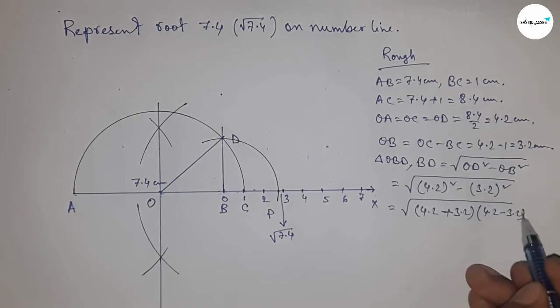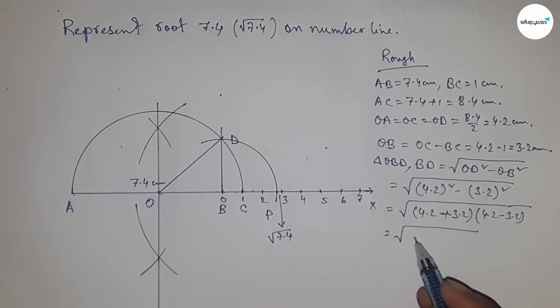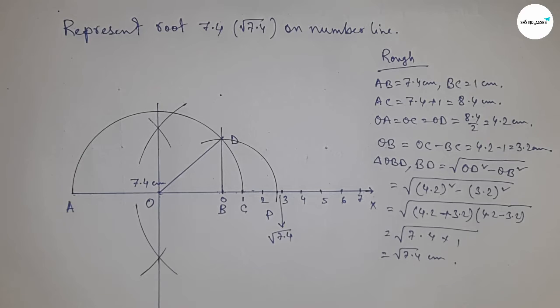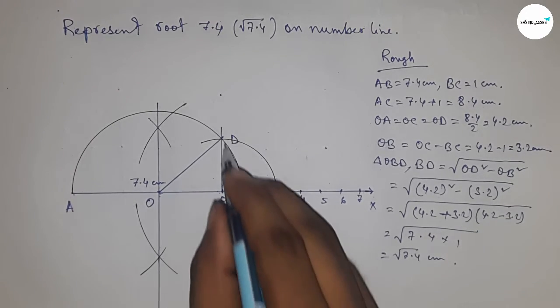From this, we get 7.4 times 1, so this is root 7.4 centimeters. Therefore, distances BD and BP are equal to root 7.4 centimeters.